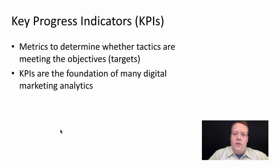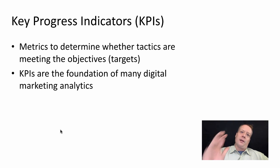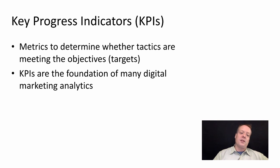That could be an objective you're trying to achieve by increasing content and different aspects of engagement on that page. It might be that we want 100 new visitors to our page within the next month — the objective would be 100 new visitors, and the key progress indicator would be the number of visitors to our website. KPIs in many ways are the foundation of digital marketing analytics; we use them to define what we're interested in measuring.